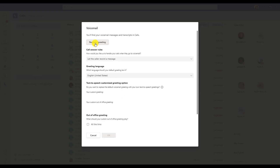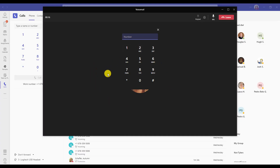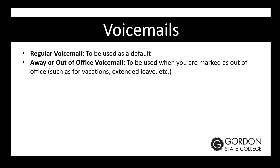When choosing such, you want to choose to record a greeting. Notice that the voicemail area also looks similar to a web conference call. You would then want to follow the protocol to set up your voicemail. There are two types of voicemails within Microsoft Teams Voice: the regular voicemail that will be used by default, as well as your away or out of office voicemail, which will be used when you're marked as out of office, such as for vacations or extended leave.